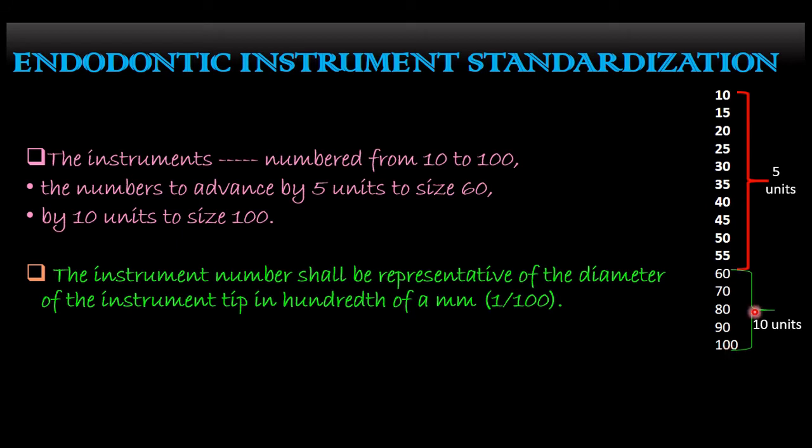The instrument number will tell about the diameter of the instrument tip in hundredths of a millimeter. For example, instrument number 20 will have a tip diameter of about 0.20 mm at the tip, instrument number 10 will have 0.10 mm at the tip, and number 15 will have 0.15 mm at the tip.